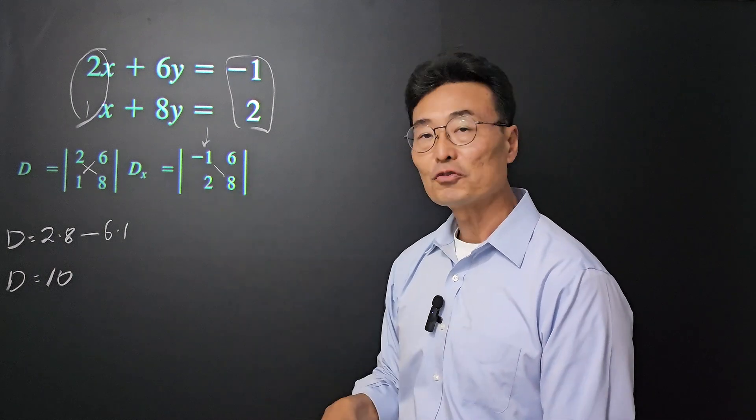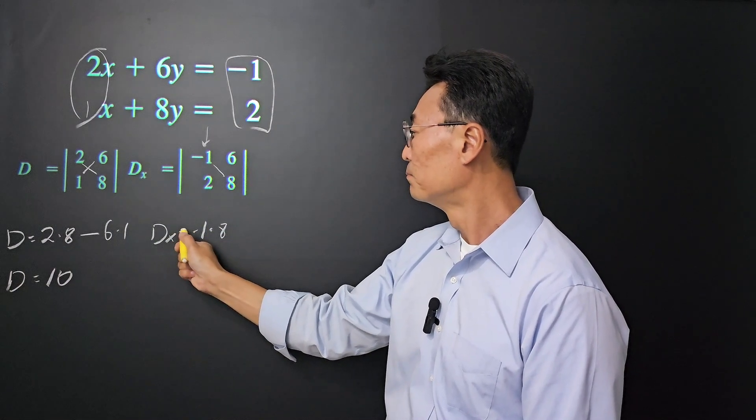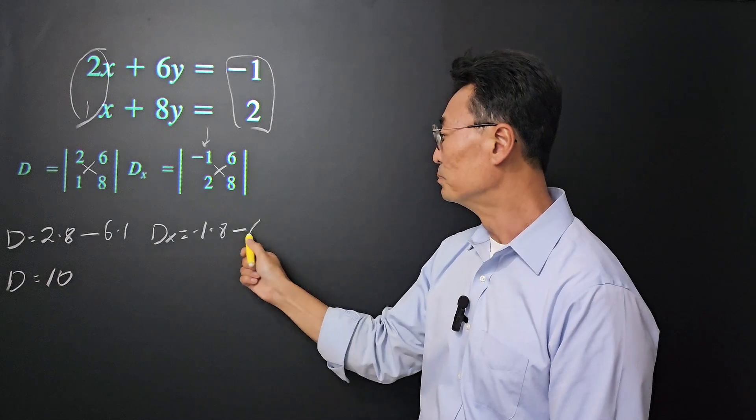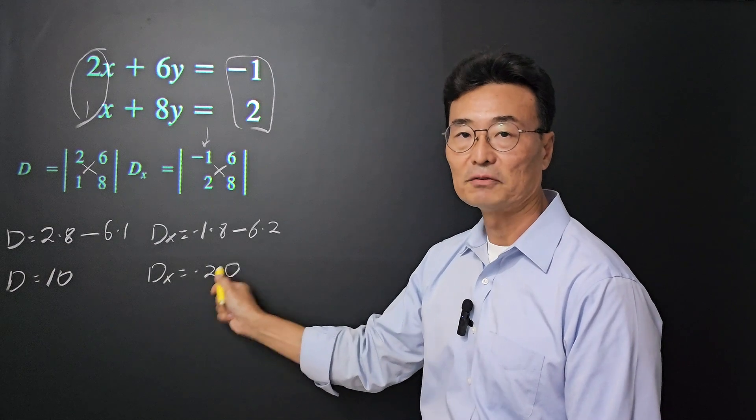We take negative 1 times 8 minus—it's always minus—6 times 2. If you do this, we get Dx equals negative 20.